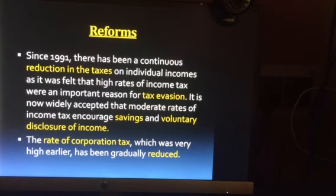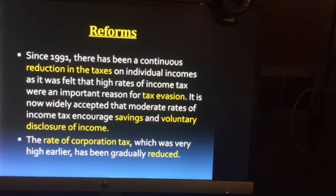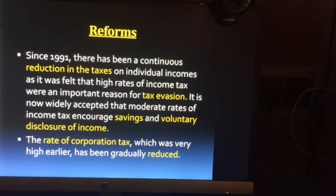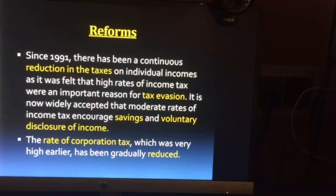The reforms that were made included a reduction in taxes on individual incomes. It was felt that high rates of income tax were an important reason for tax evasion — people forced to pay huge taxes were simply not paying them and not declaring their income, so the government was not earning. The government reduced the taxes so that people could save, declare their income, and the tax would still be earned. The rate of corporation tax was also very high earlier and was also gradually reduced.